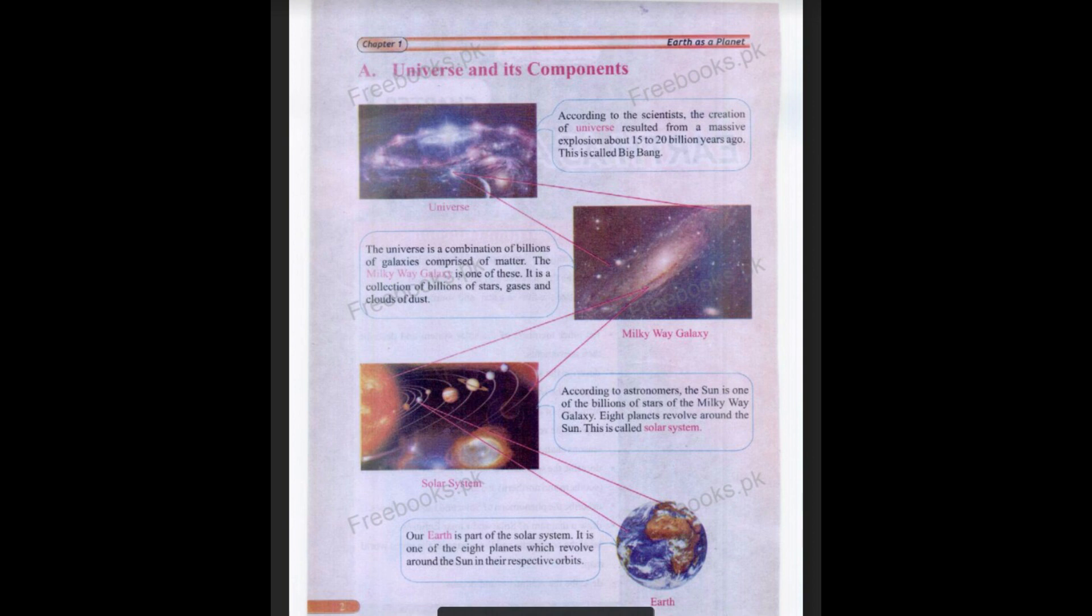The universe is a combination of billions of galaxies, comprised of matter. If we look at the simple definition which is in the book, it says that the universe is a combination of billions of galaxies. It is the collection of billions of stars, gases and clouds of dust.